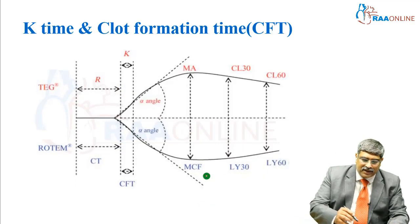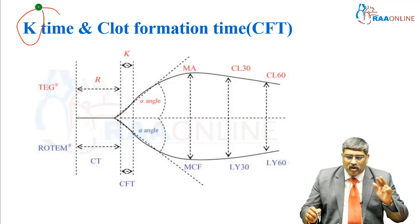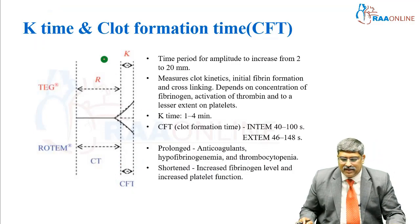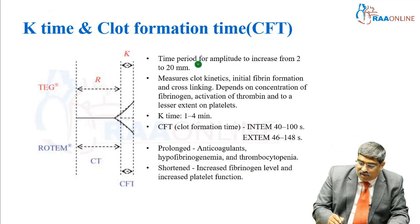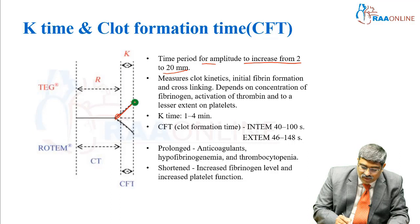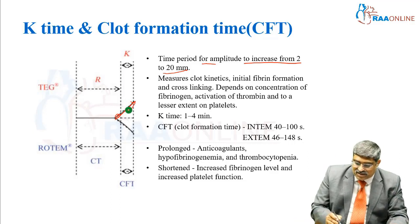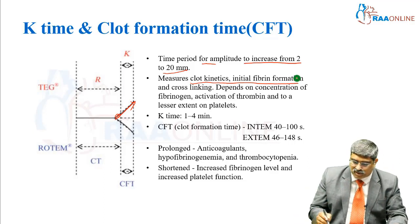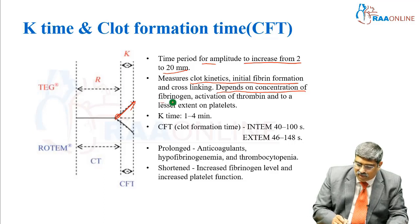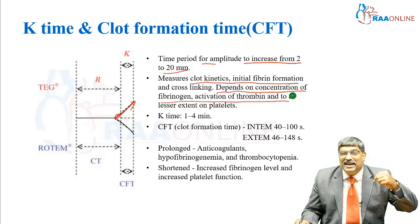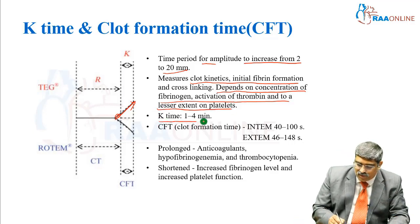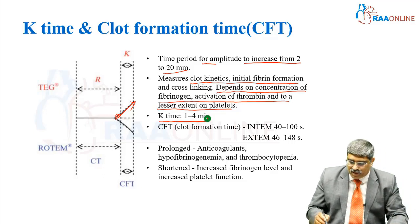Coming to the K time, which is nothing but kinetics time, or clot formation time in ROTEM. This is the time required for increasing the amplitude from 2 to 20 mm. It measures clot kinetics, fibrin formation, and cross-linking of fibrin. It depends upon the concentration of fibrinogen, activation of thrombin, and a little bit on platelets.